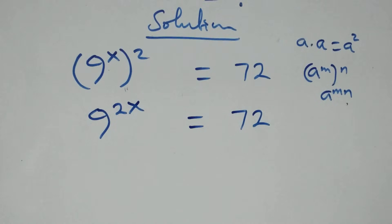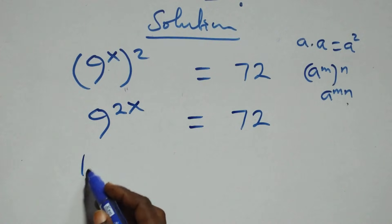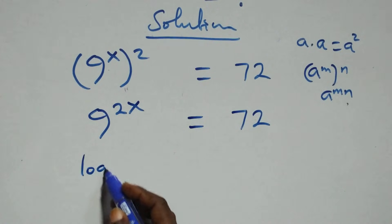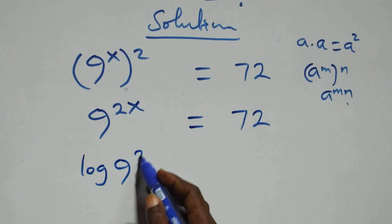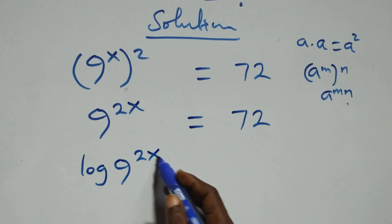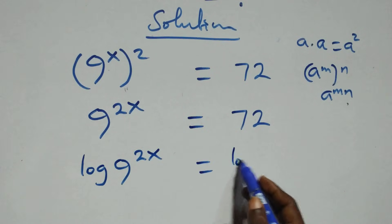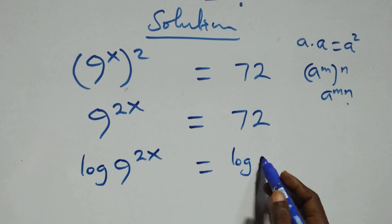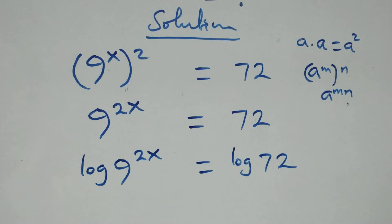The next step here: take the log on both sides. So we have log of 9 raised to power 2x equals to log 72 on this side.